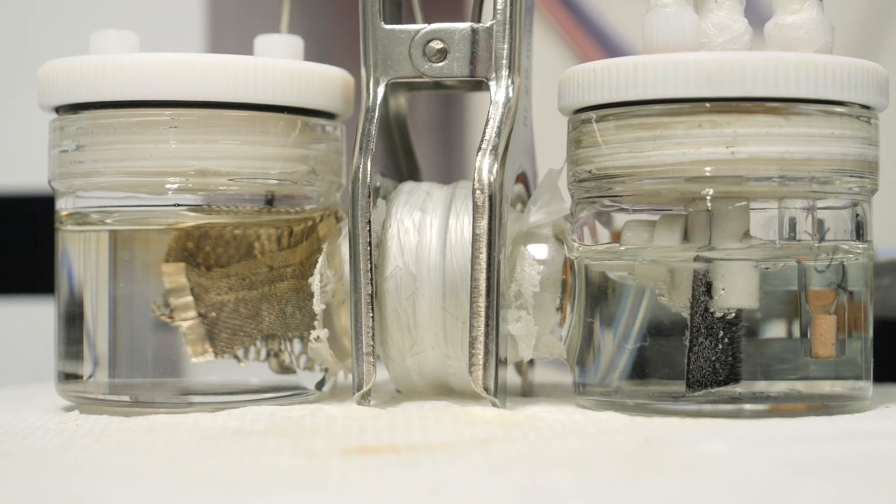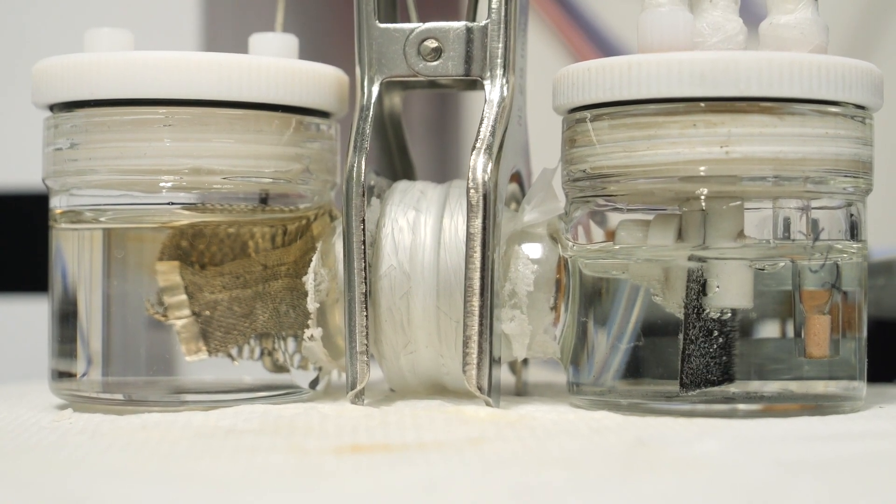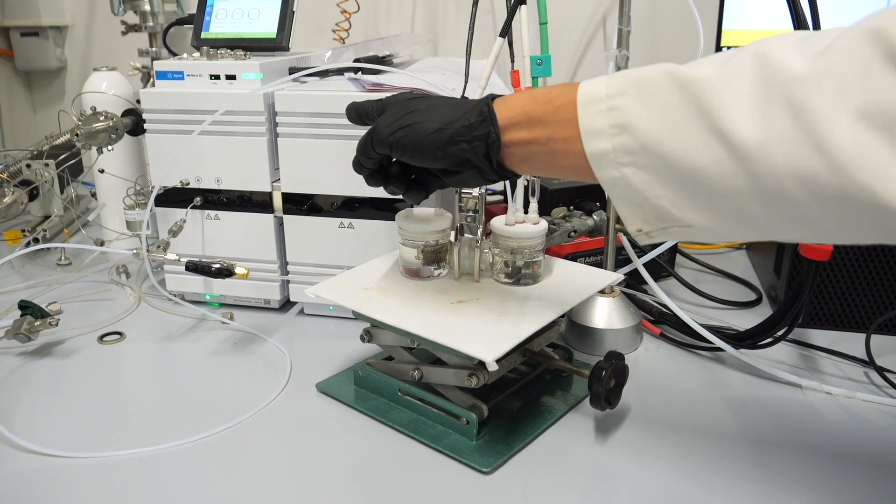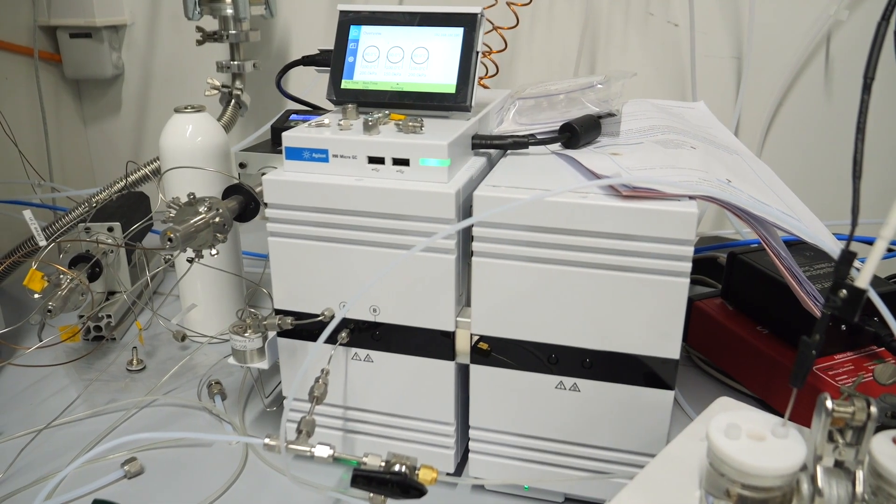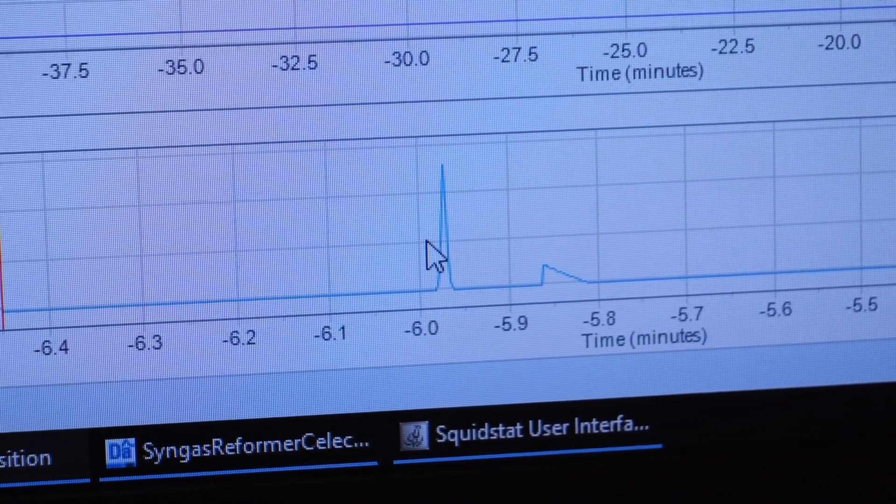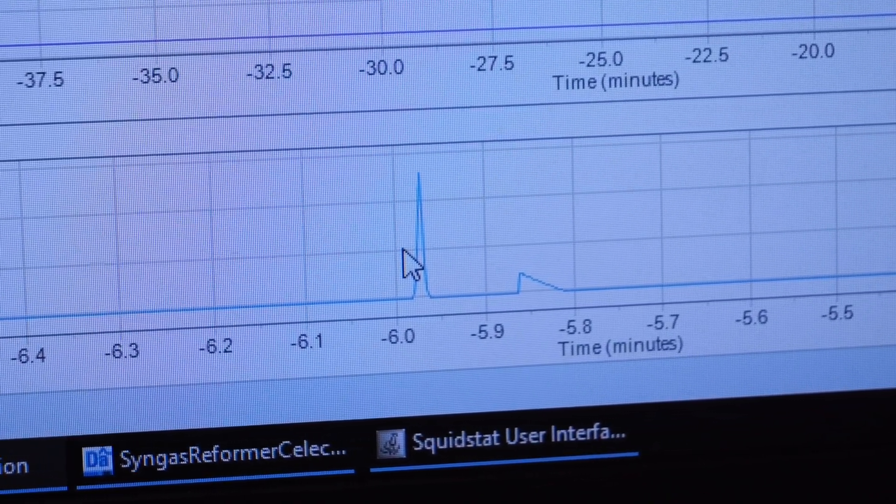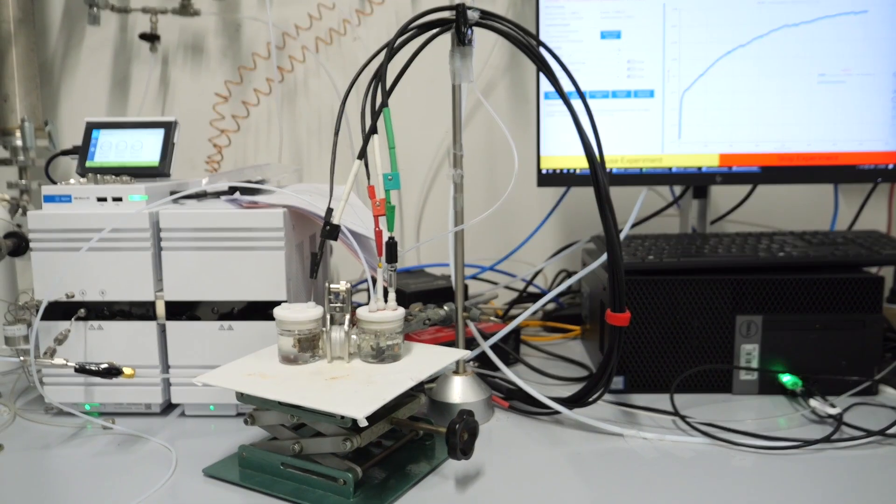After the reaction, the CO2 will be reduced to CO and then measured by the GC, as you can see there. With this instrument, we can quantify the amount of CO2 that will be reduced to CO. That's it.